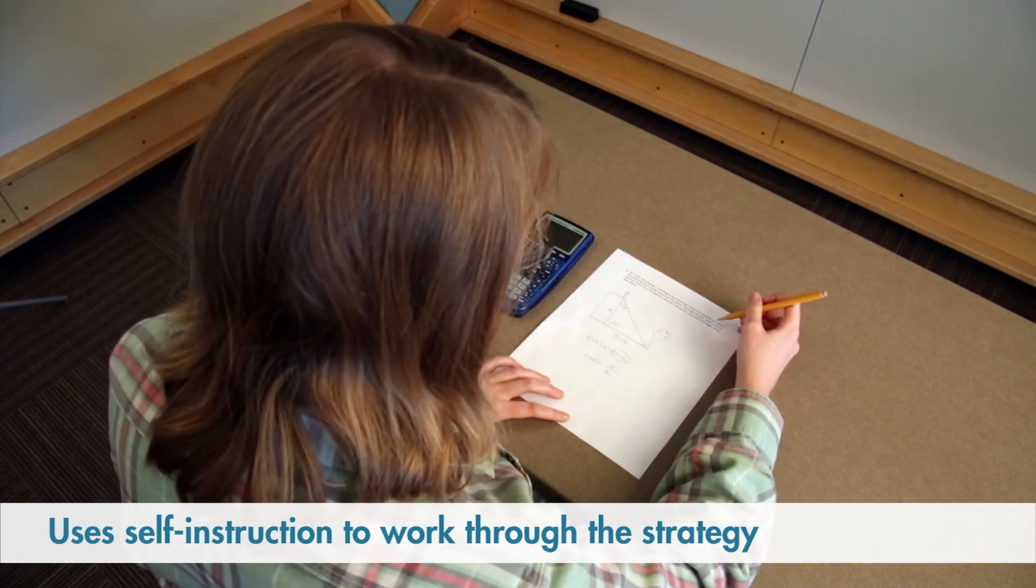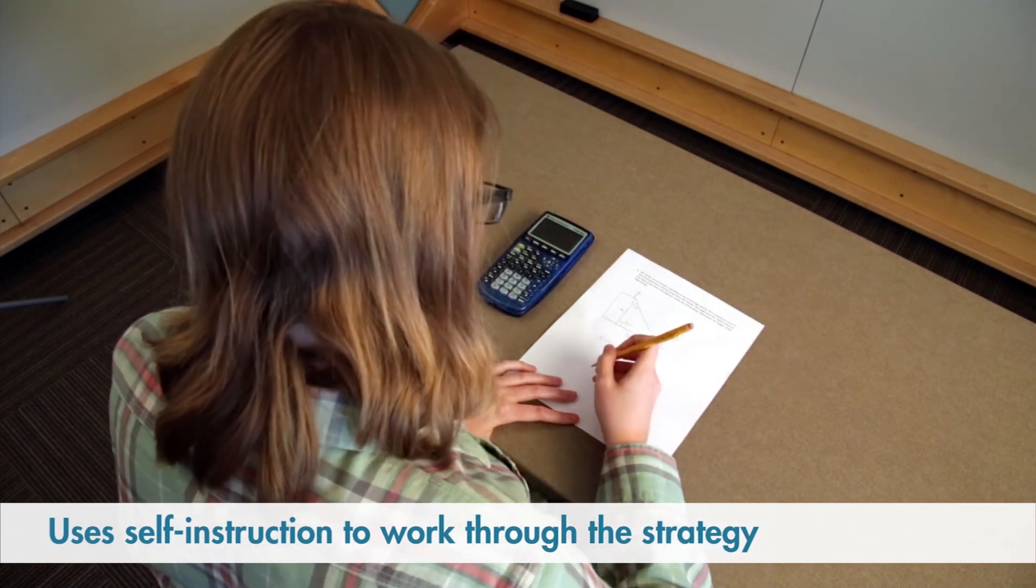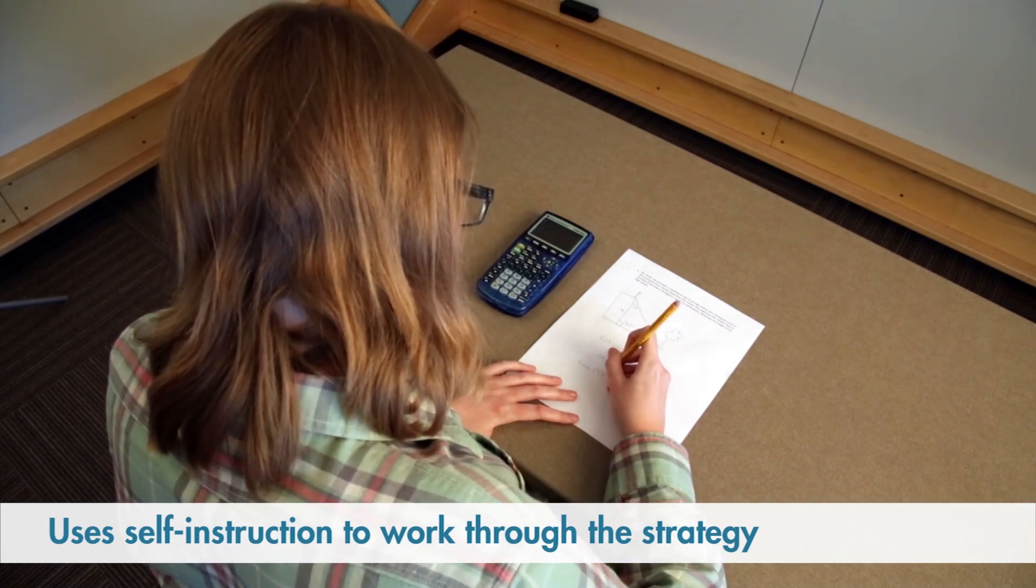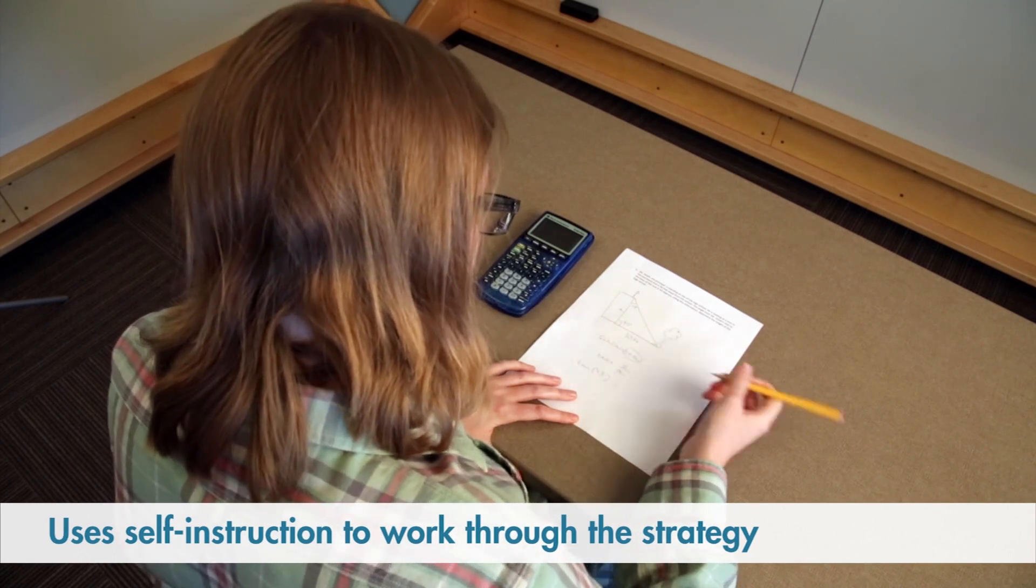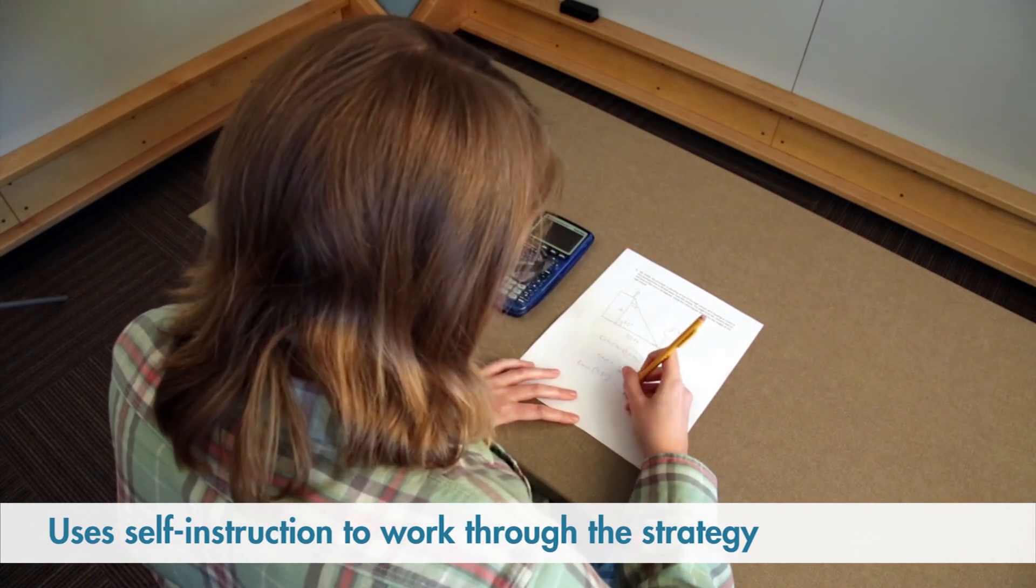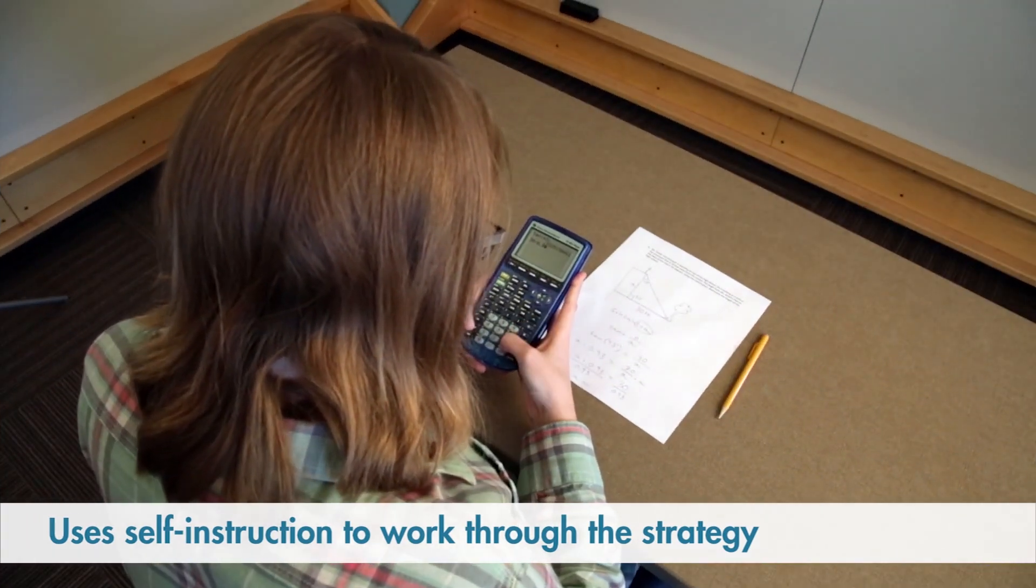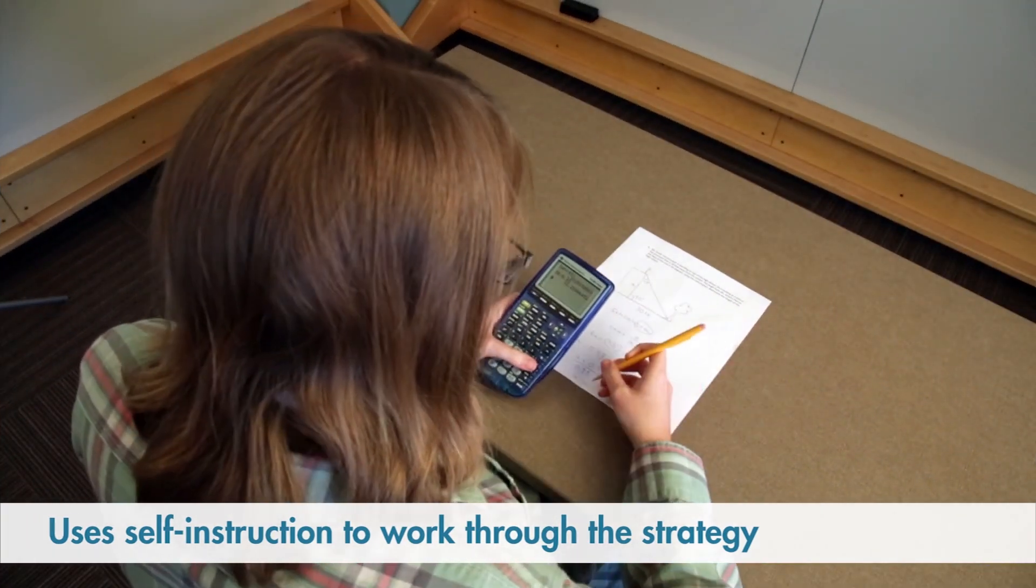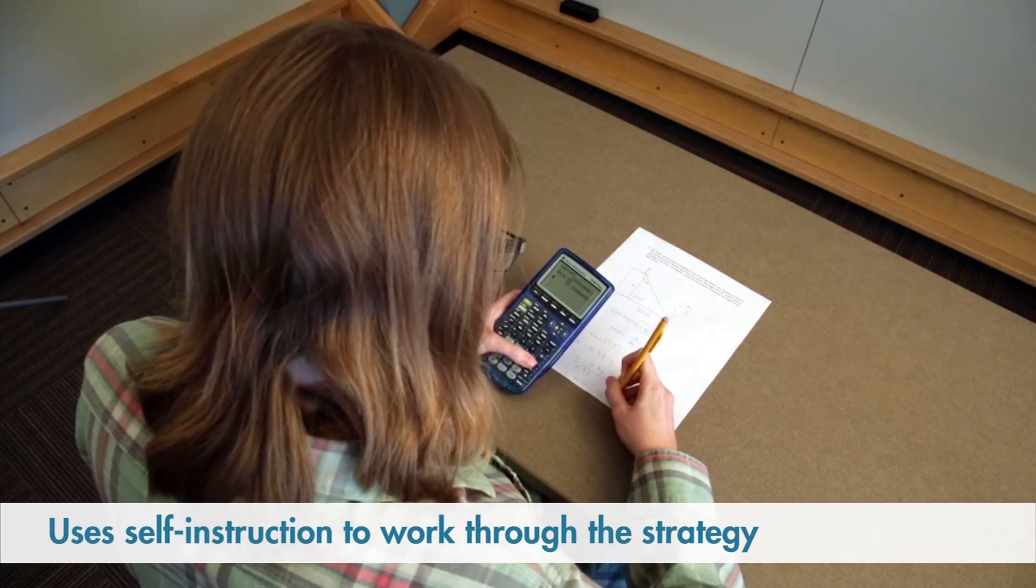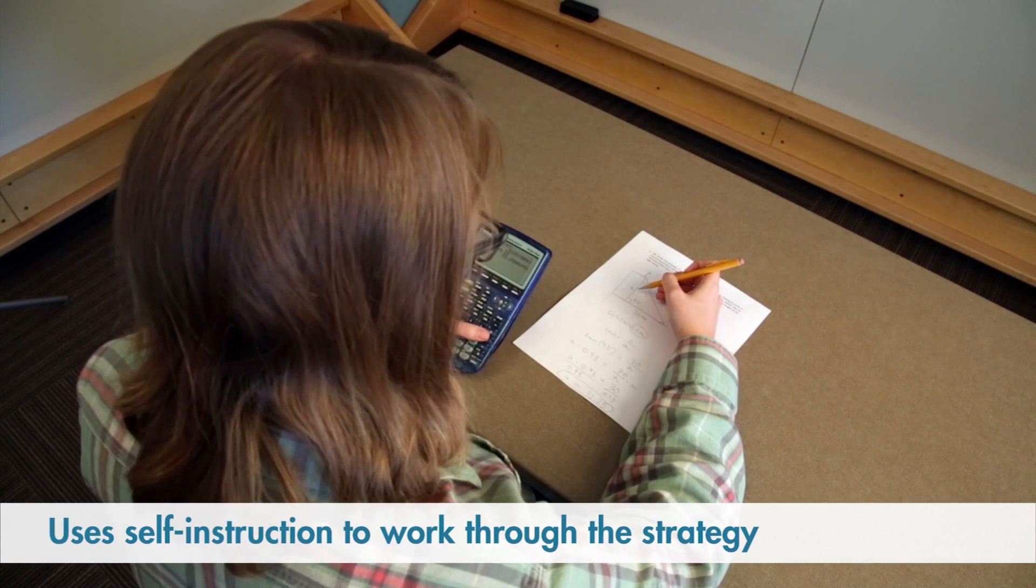Now all I have to do is plug in the information that I have in order to find A. Tangent of 43 degrees, the angle, equals 30, that's the opposite side, over A. And I find that 30 over 0.93 equals 32.25. So the height of this building is 32.25 feet.